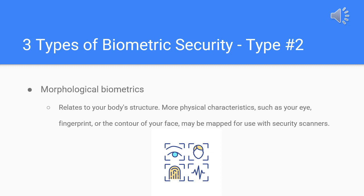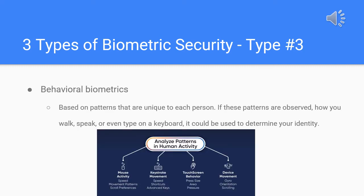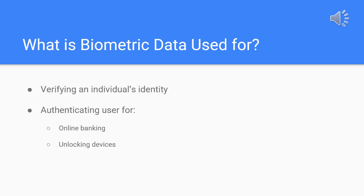The second category is morphological biometrics, which involves the structure of your body — more physical traits like your eye, fingerprints, or the shape of your face that can be mapped for use with security scanners. The third and final category is behavioral biometrics, which are based on patterns unique to each person. How you walk, speak, or even type on a keyboard can be an indication of your identity if these patterns are tracked.